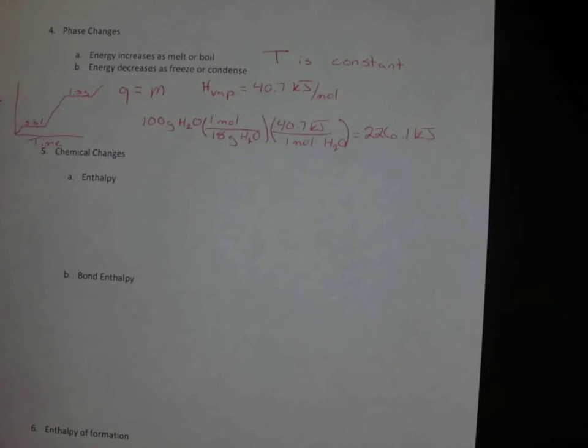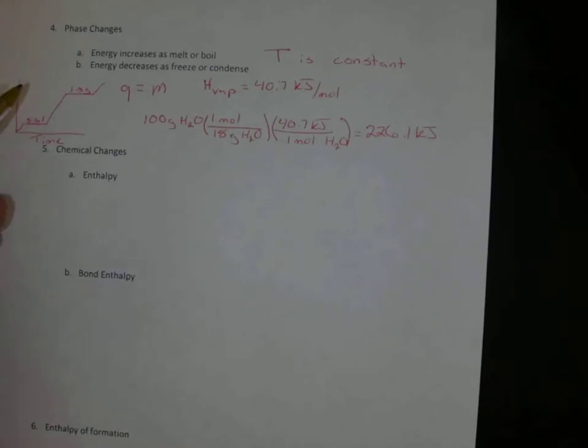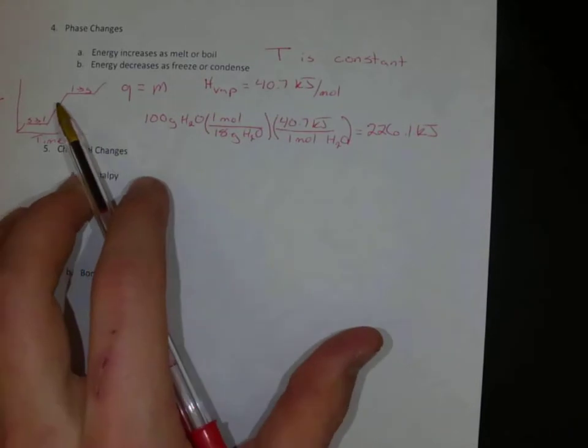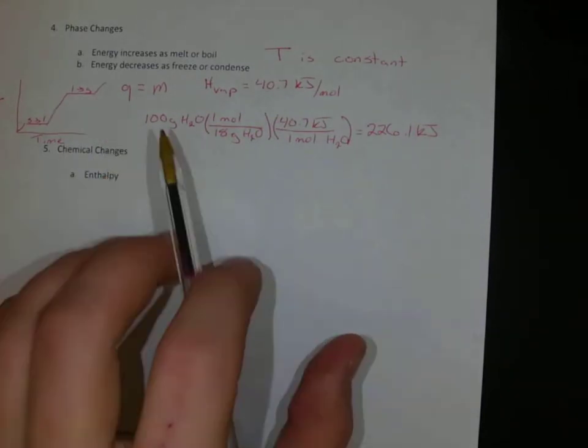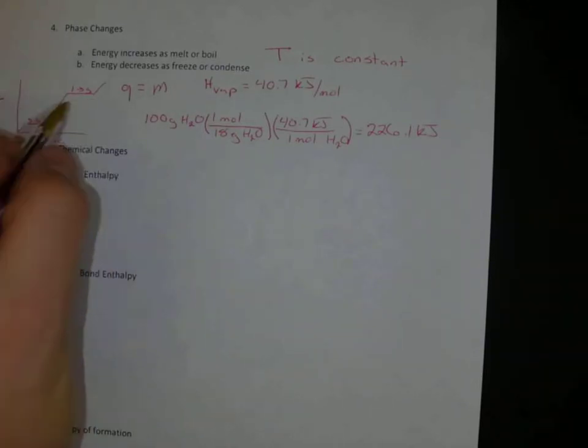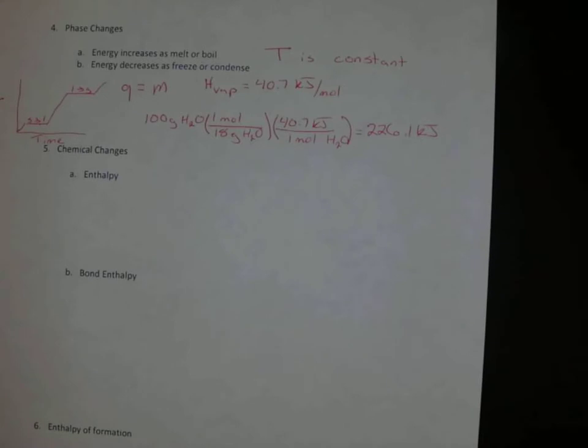Whenever we have a phase change, though, remember that it is reversible. So if it takes 226.1 kilojoules to boil all that water, we have to put all of that energy into the system. It is reversible, and it's going to give out 226 kilojoules to get back to being a liquid. So going forward here is reversible, and we can go backwards. This is known as molecular reversibility, and it will be important as you move on in your chemistry career.